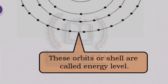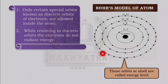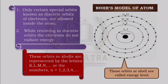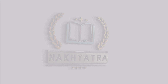These orbits or shells are called energy levels. While revolving in discrete orbits, the electrons do not radiate energy. These orbits or shells are represented by the letters K, L, M, N, or by the numbers n = 1, 2, 3, 4, etc.